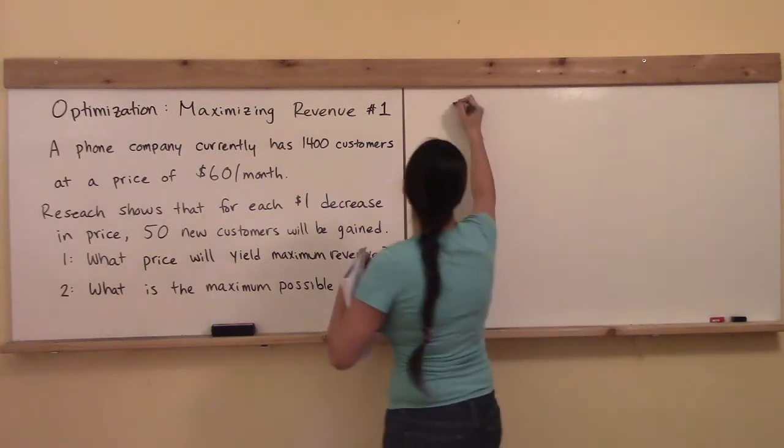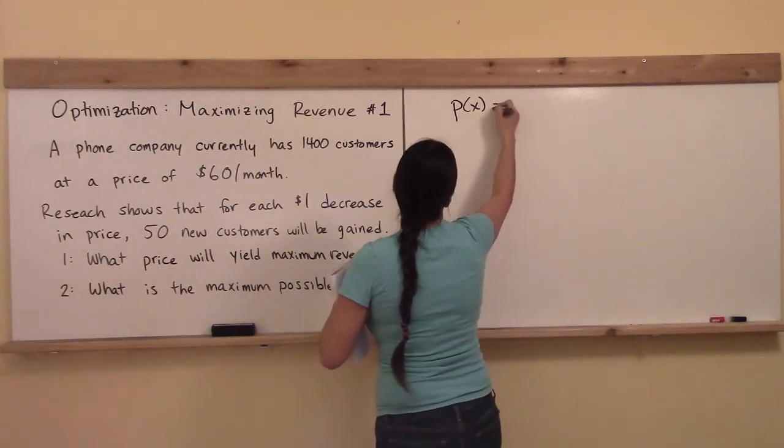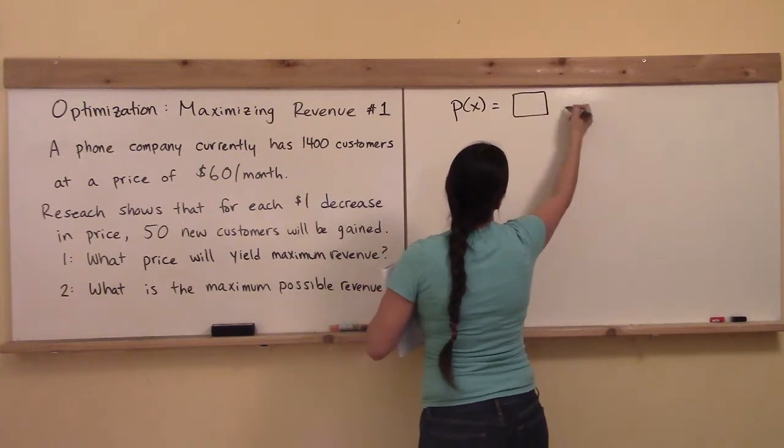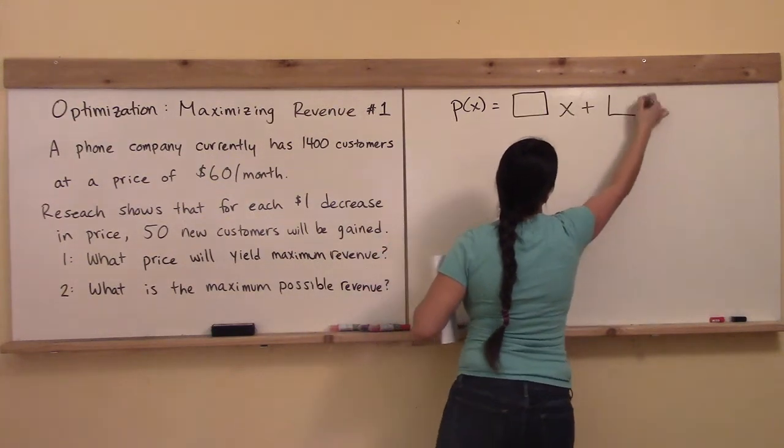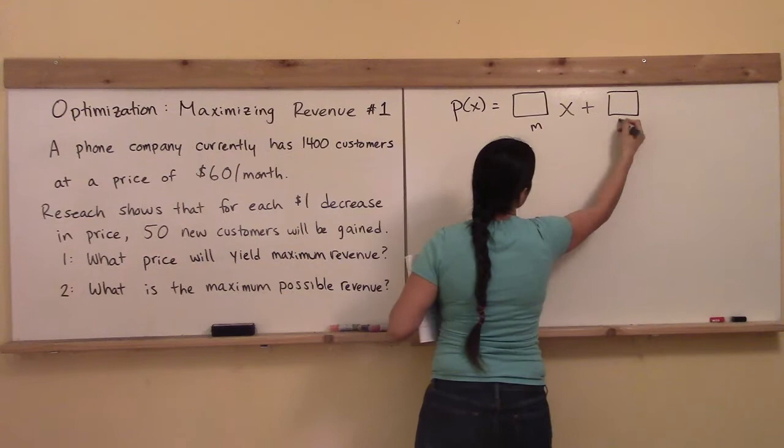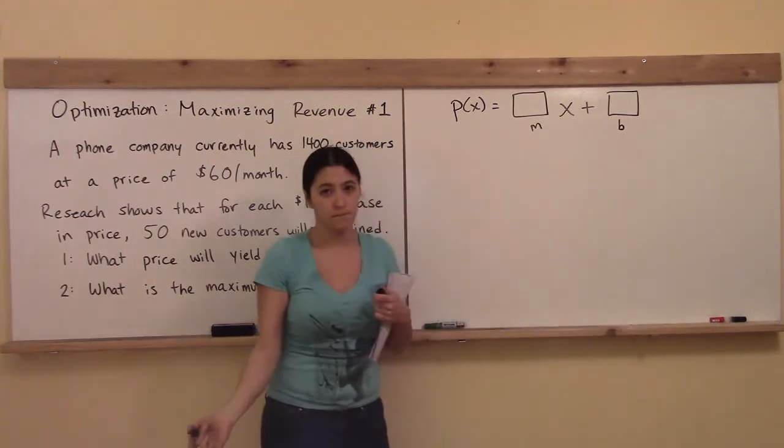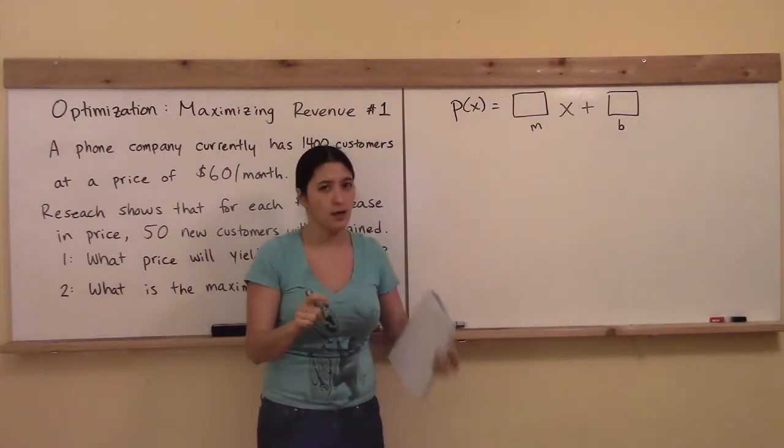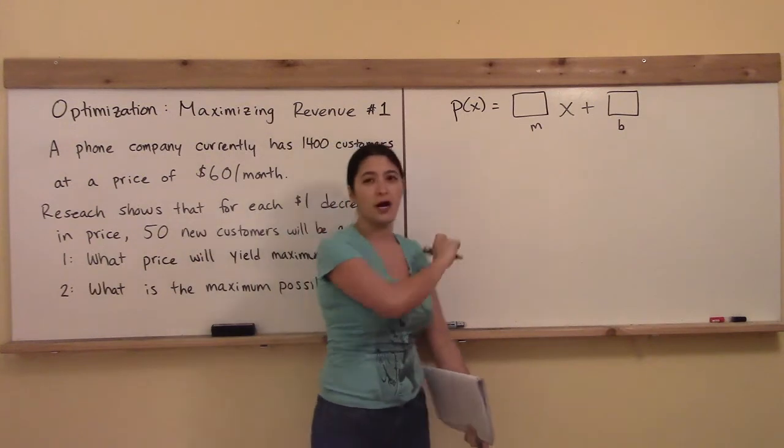So to review, I would like you right now to take the information you've been given on these first two sentences and form the price function P(x) where the answer is going to be in the form something x plus something. Can you do it? Do you remember how to do it? Pause the video and try it out right now.